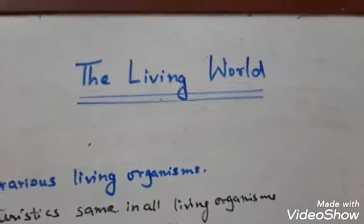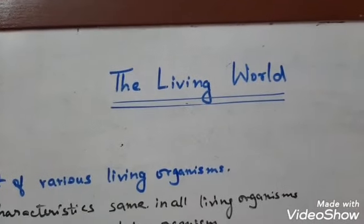Hi children, hope you are all doing well and gradually progressing in your studies. Here I am with a new video of Class 11 Chapter 1: The Living World. I have subdivided this chapter into three parts. Today I will discuss the various characteristics of a living organism. In the next video I will discuss taxonomical hierarchy and classification, and the third video will cover keys of identification like herbarium and zoo museum.